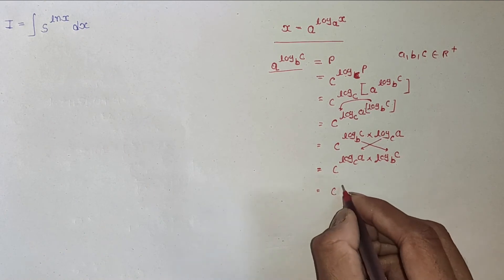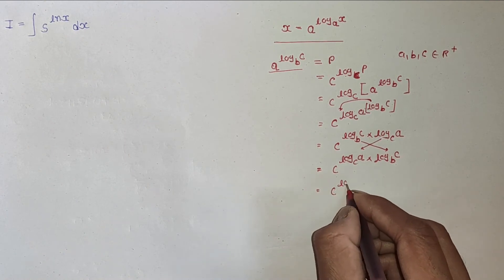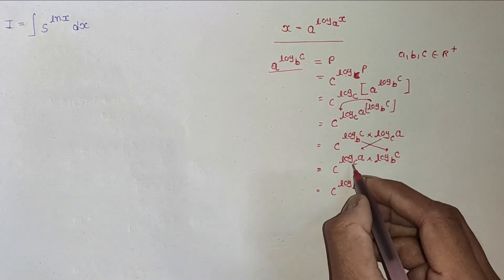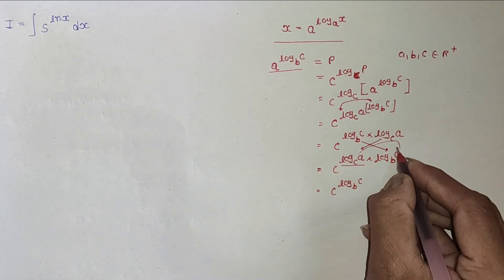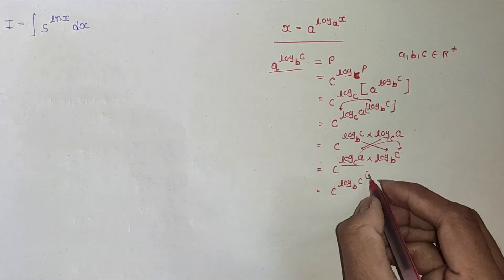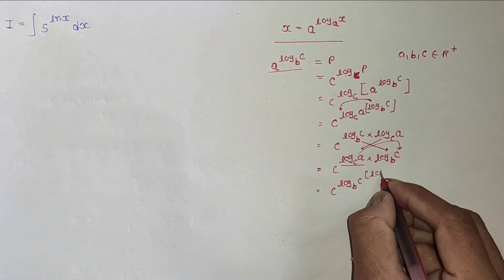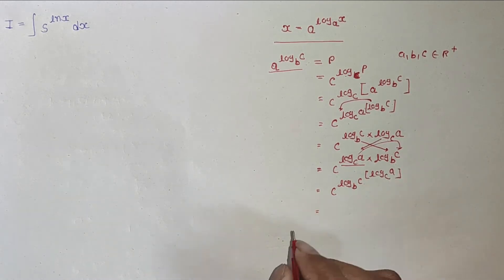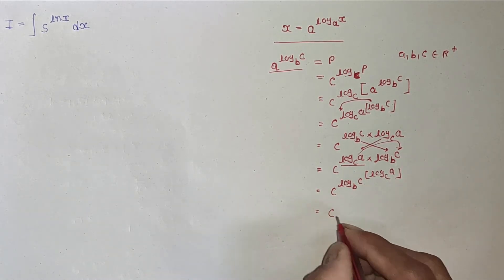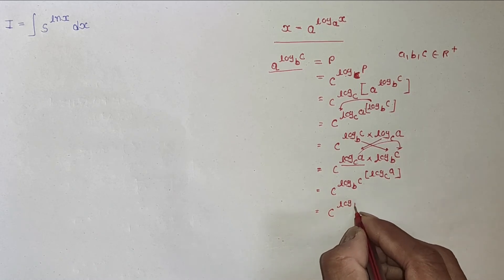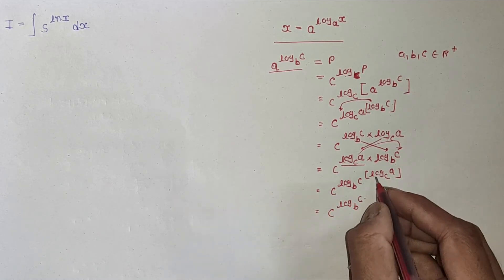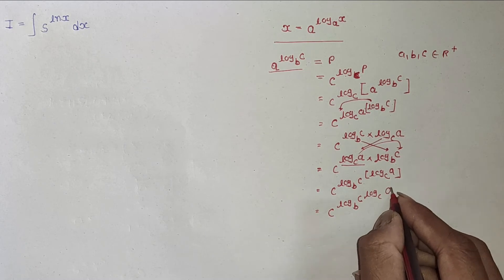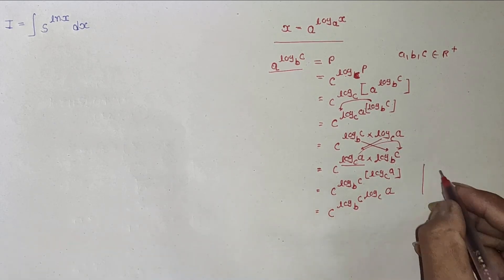So it becomes c^(log_b c)^(log_c a). As we know, c^(log_c a) = a, so this term becomes a, giving us c^(log_b a).